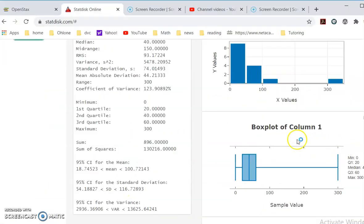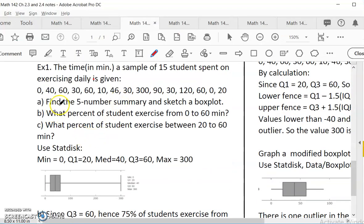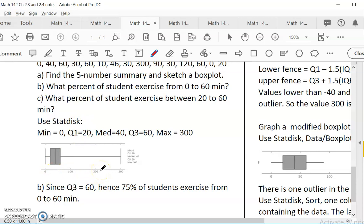And then I copy, screen print this and then copy it over. And then they also ask us to see what percent of students exercise from 0 to 60 minutes. Let's label this. So 60 is Q3. Q3 is 75 percent, because it's 75 percent: 25, 25, 25, 25, 75 percent. Now what about what percent of students exercise between 20 to 60? 20 to 60 is just the box. So that's the middle 50 percent. That's 50 percent.